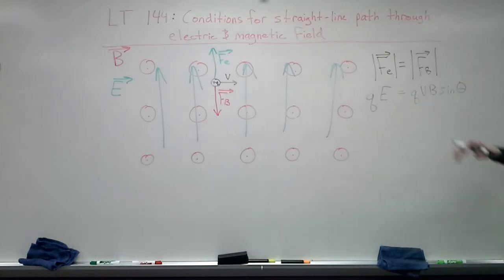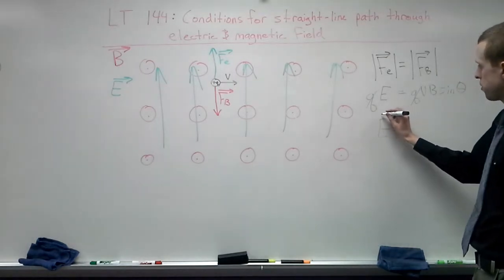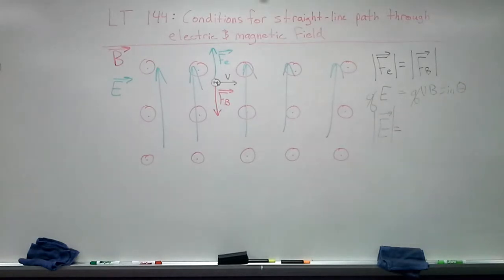And so we can calculate the magnitude required for this thing to travel in a straight line of our electric field. You notice that q appears on both sides of the equation. So the electric field has to have a magnitude equal to the velocity times the magnitude of the magnetic field. And then times sine of 90 degrees, which in this case is just going to be one.